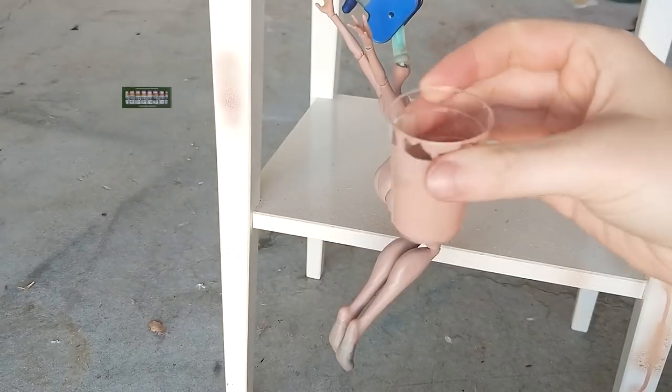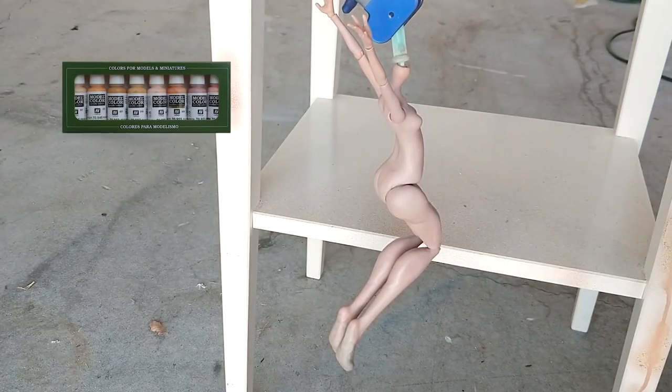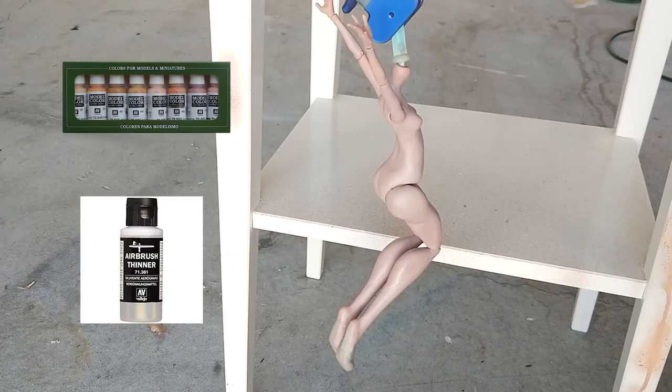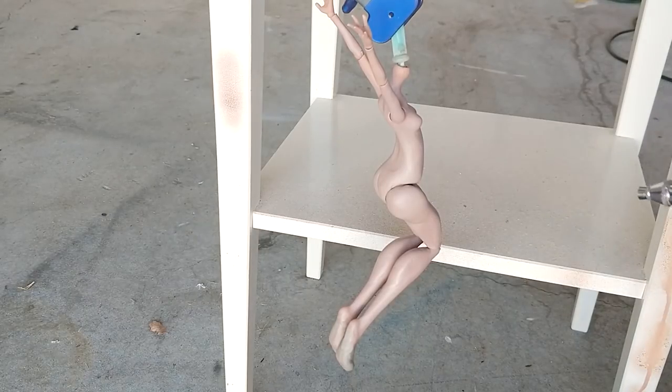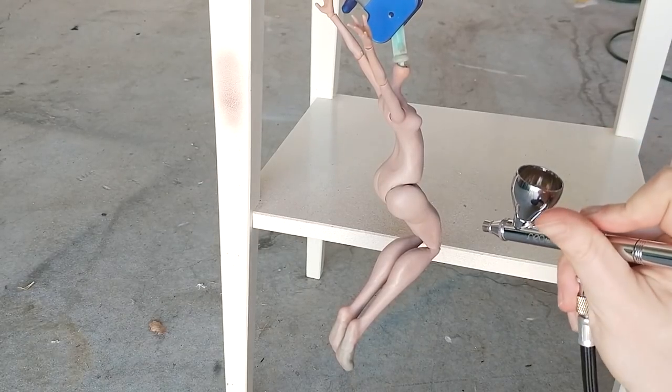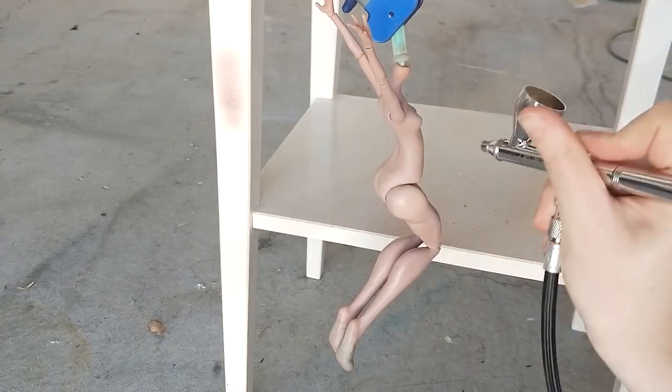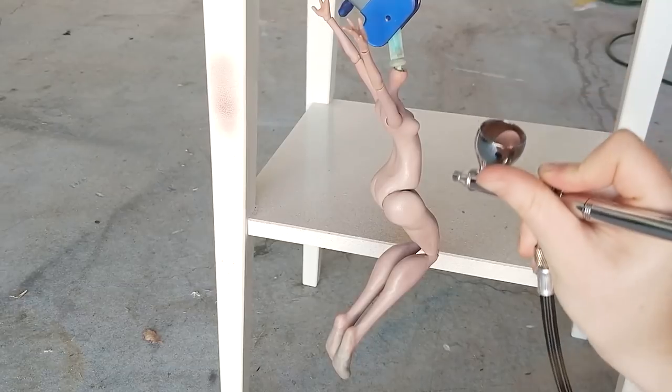And mixing up some model color and some airbrush thinner, I go ahead and start spray painting her body. I wanted to keep the base color slightly close to the original doll just so you can't see the wear on the joints as much. I also spray painted her hands and feet and the center of her face white too.